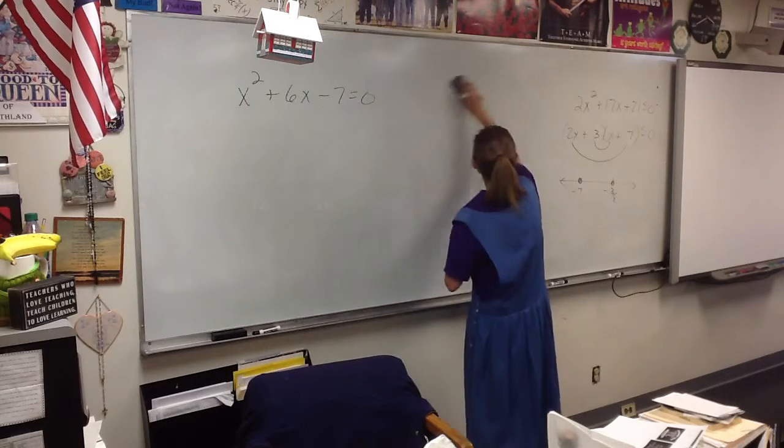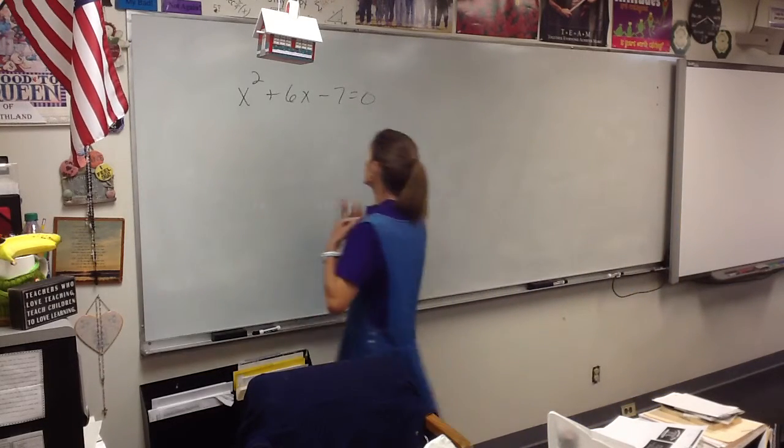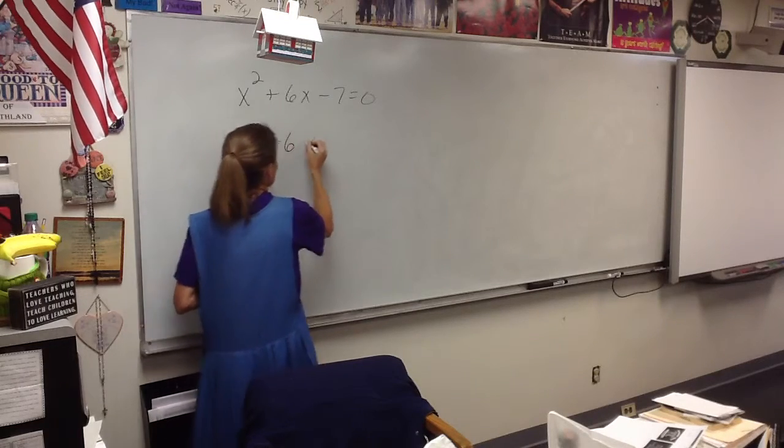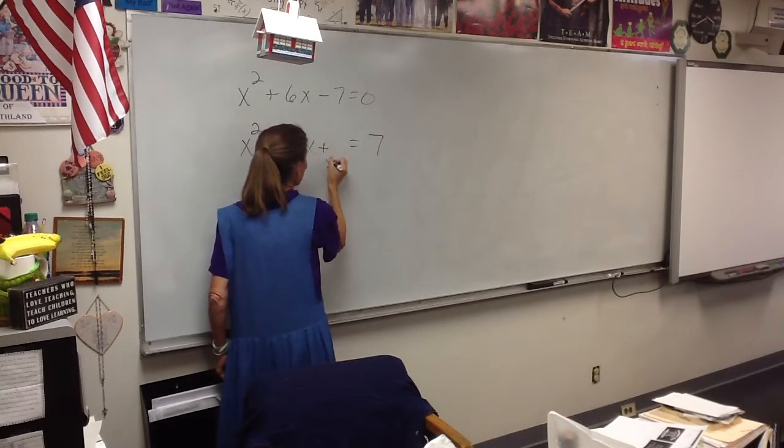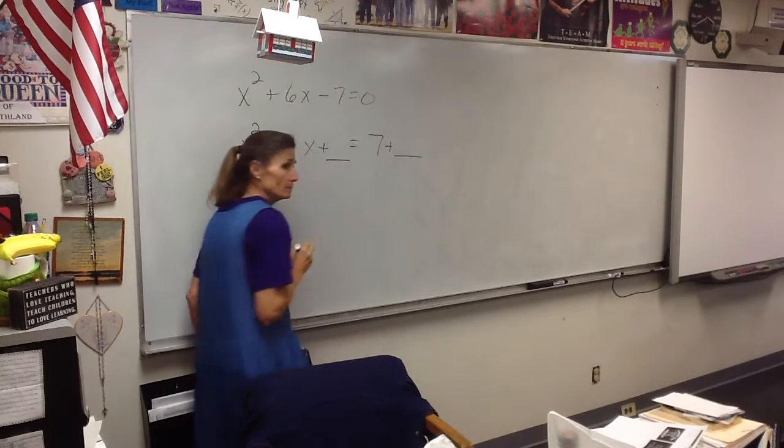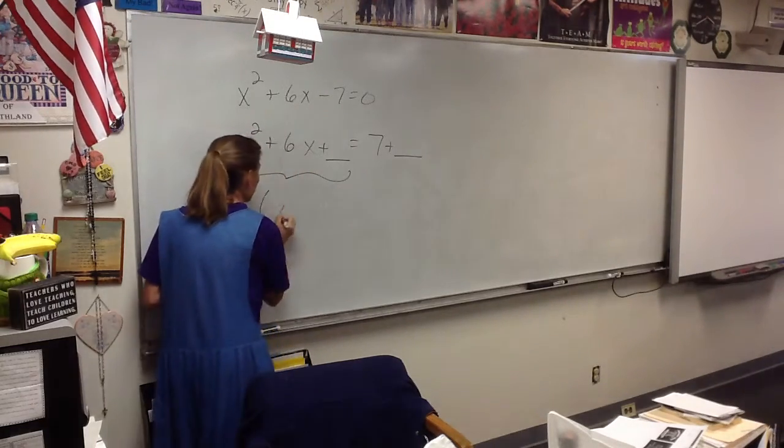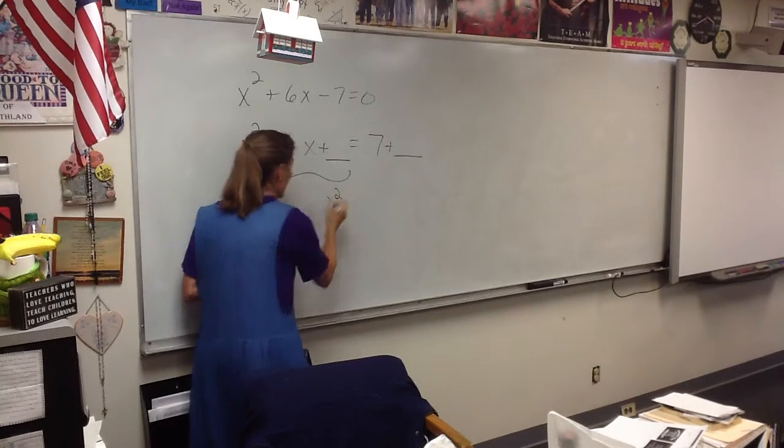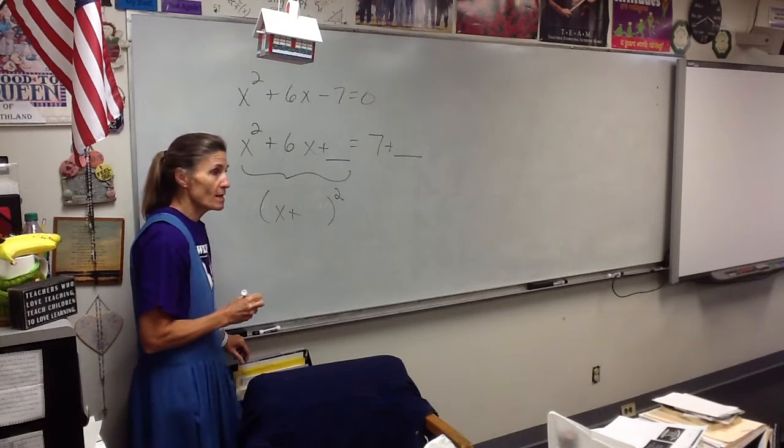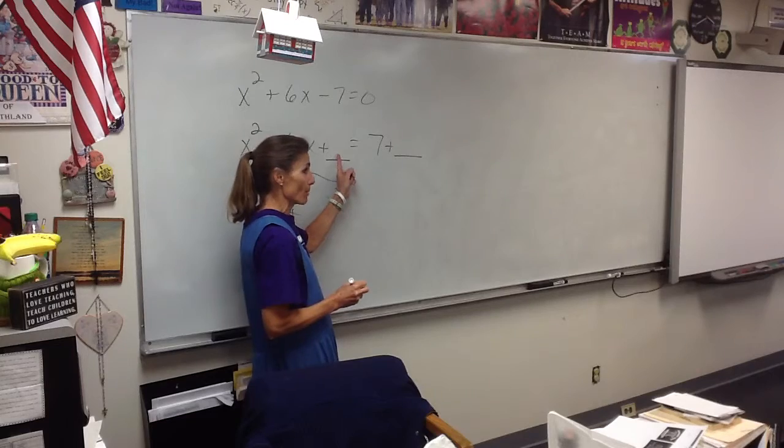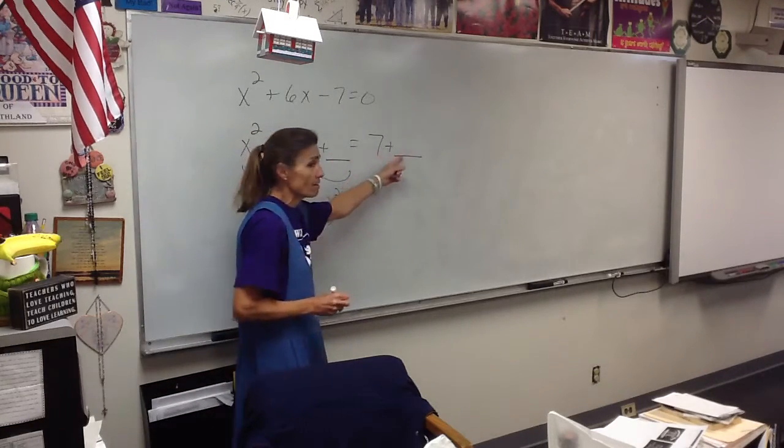Now it says complete the square. That means that we need to move the 7 to the other side because we are creating room to add a new number so that this will be something squared. Who remembers from yesterday how to find the number that we add to both sides? Austin Cox, how do we find the number we add to both sides?